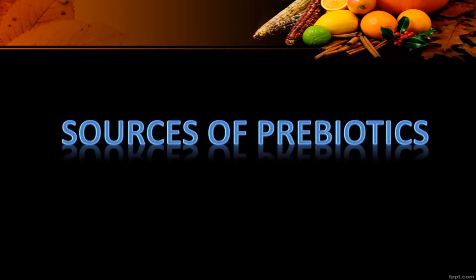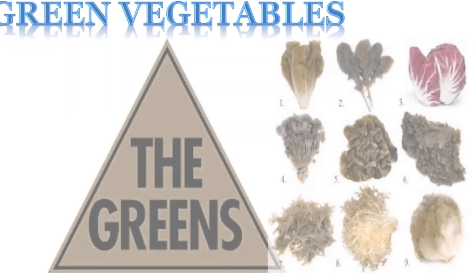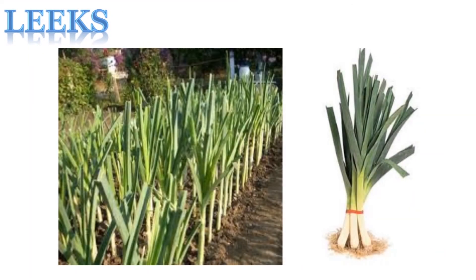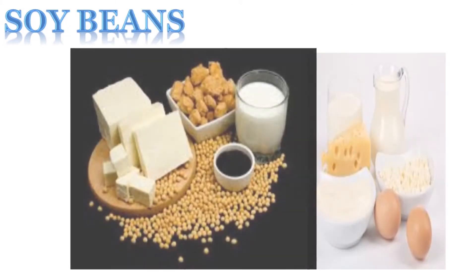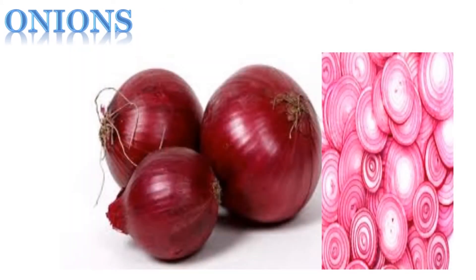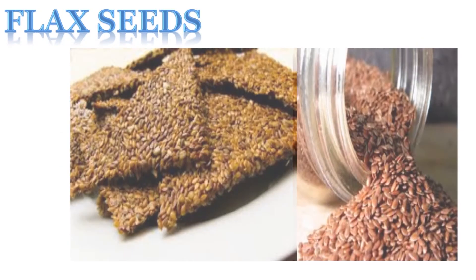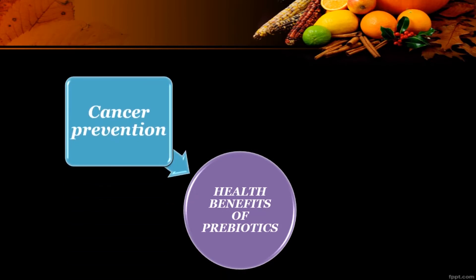Let us move on to the sources of prebiotics. Since it is a fiber, it is highly present in berries, green vegetables, banana, leeks, chicory root, oats, soybeans, onions, whole grains, honey, and flax seeds.